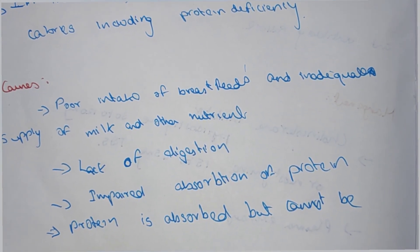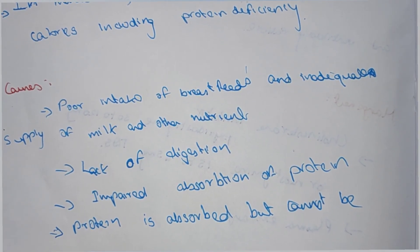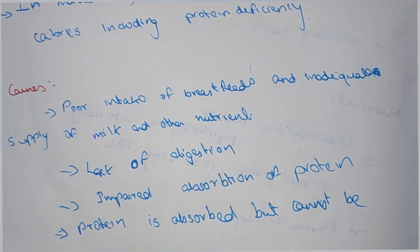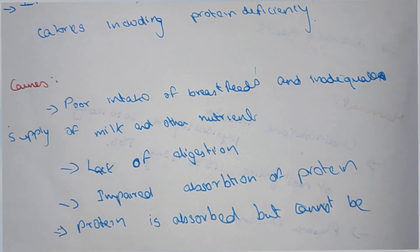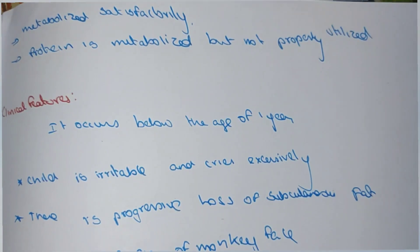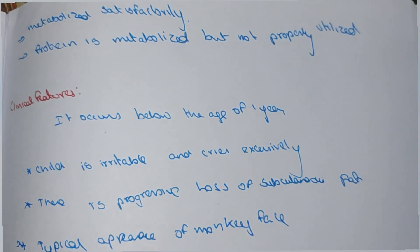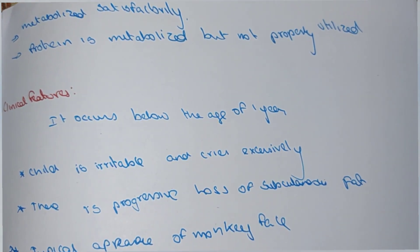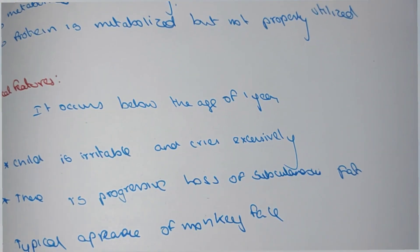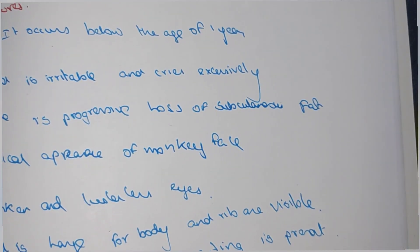There is lack of digestion, impaired protein absorption, protein that is absorbed but cannot be metabolized satisfactorily, and protein that is metabolized but not properly utilized. These are the causes of protein calorie malnutrition.